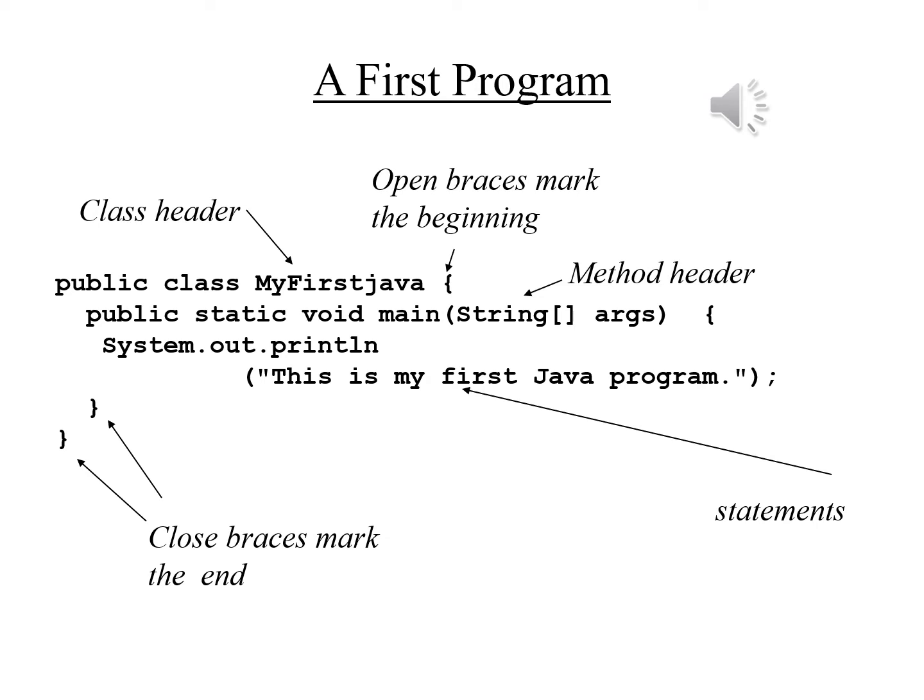Inside the class we need a header for the main method. This is a main program, and the various procedures we work with in Java are all typically called methods. The distinction between functions and methods that we have in Python does not exist in Java. The main method will always begin with public static void main — it's worth repeating: public static void main.